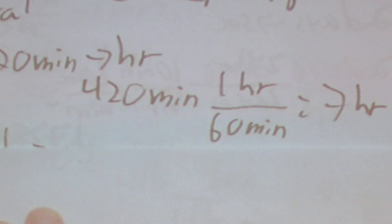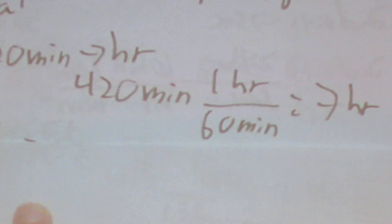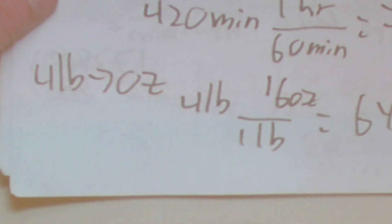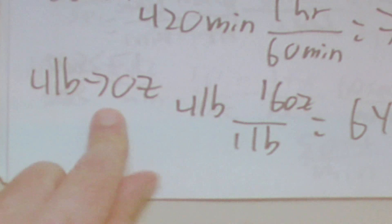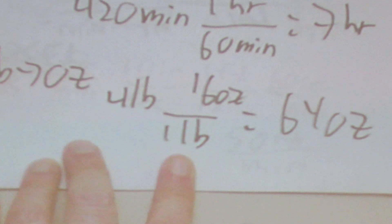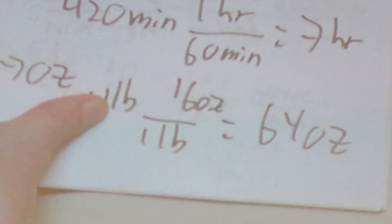Next we'll have something like 420 minutes to hours. We set it up as 420 minutes times 1 hour over 60 minutes, which equals 7 hours. Then we'll have 4 pounds 2 ounces — there are 16 ounces in one pound, so 4 times 16 equals 64.